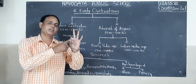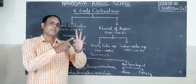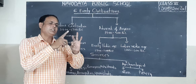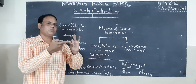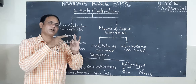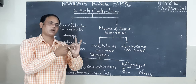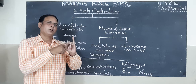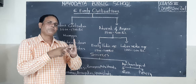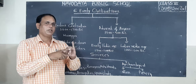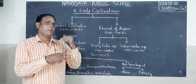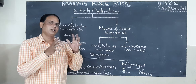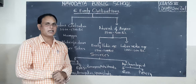Mesopotamian civilization means Iraq civilization. Egypt civilization is located in Africa continent. China and Indus civilization are located in Asia continent. Even Mesopotamian civilization also flourished in Asia continent.